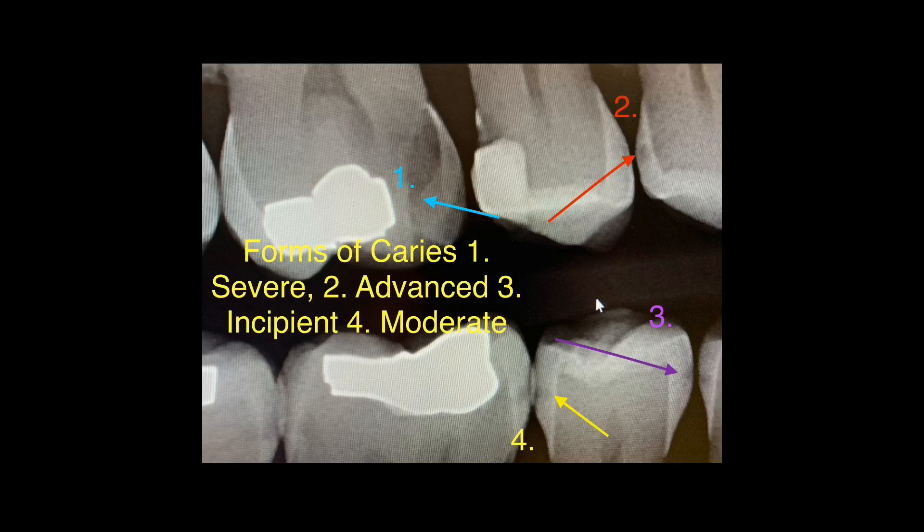Now look at number two, pointed by the red arrow. You can see the caries has completely involved the enamel and there is also a small dark circle visible in the dentine, which indicates it is an advanced form of caries.